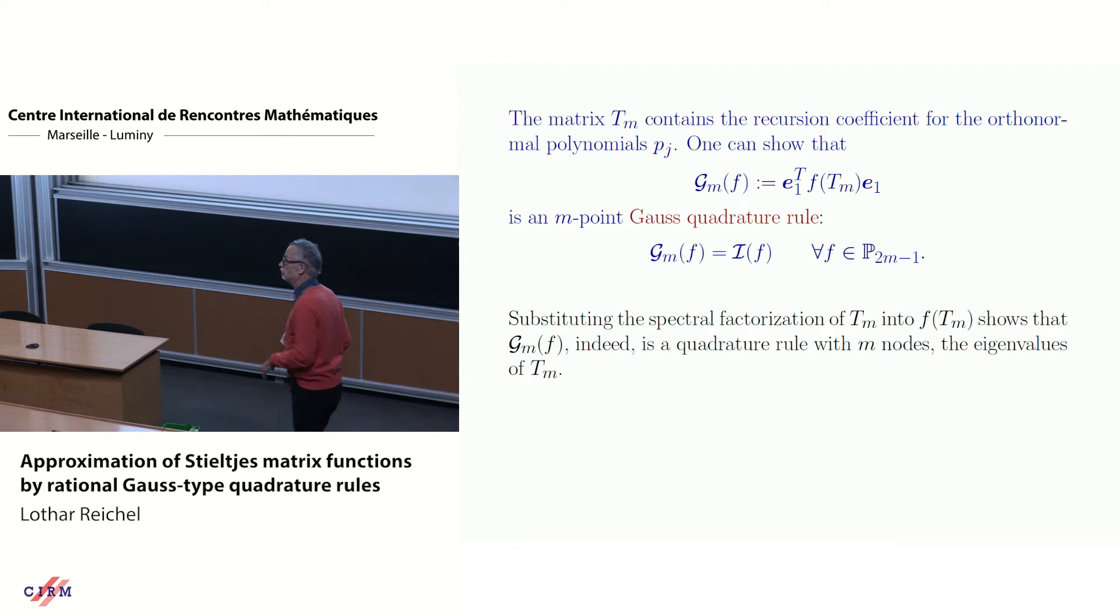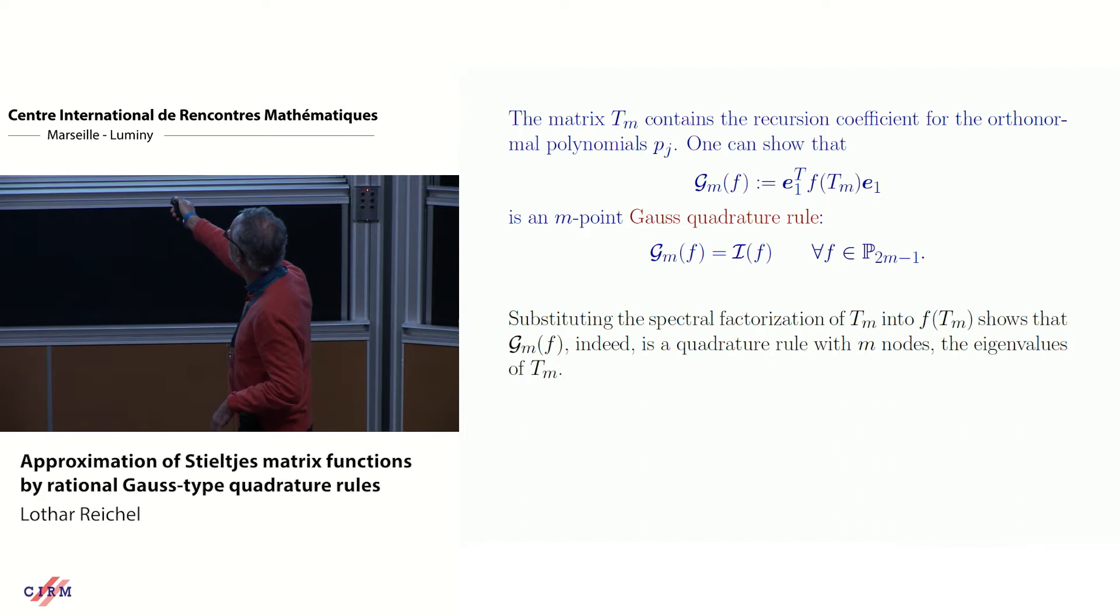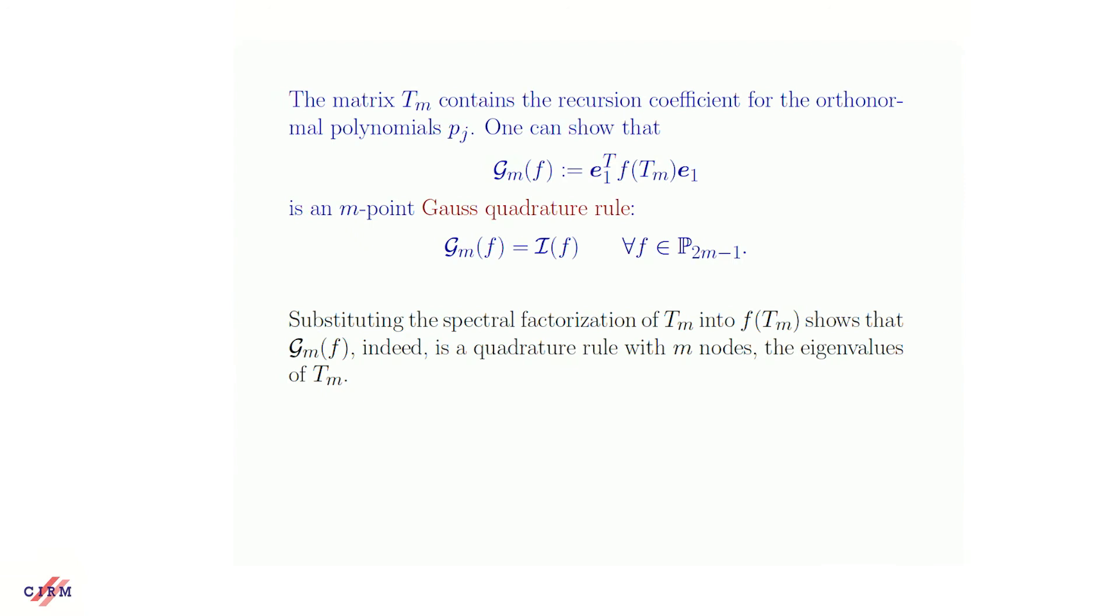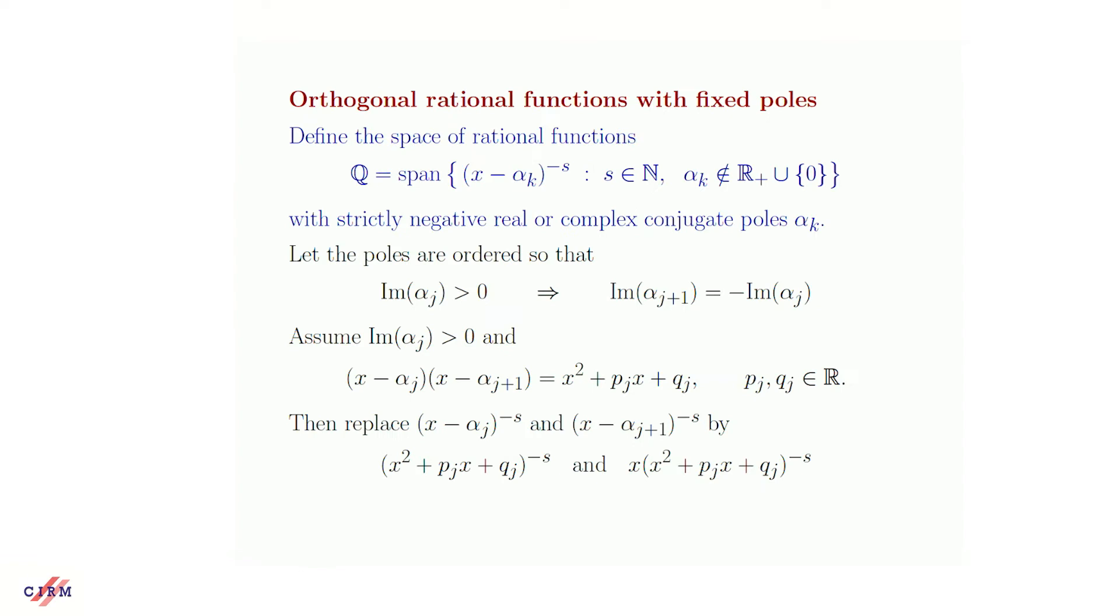The orthogonality of the vectors v_j corresponds to orthogonality of these polynomials p_j with respect to the measure d nu. So we never actually compute these polynomials, we just compute the vectors, but we have to know that this is behind this. Therefore, this is a relation to Gauss quadrature. So we have orthogonal polynomials. The Gauss quadrature rule is stated up there. T_M is this symmetric tridiagonal matrix generated by the M steps of the Lanczos method, and then one can show that this quadrature rule is exact for all polynomials of degree at most 2M minus one. One can look in Girard's book for proof.